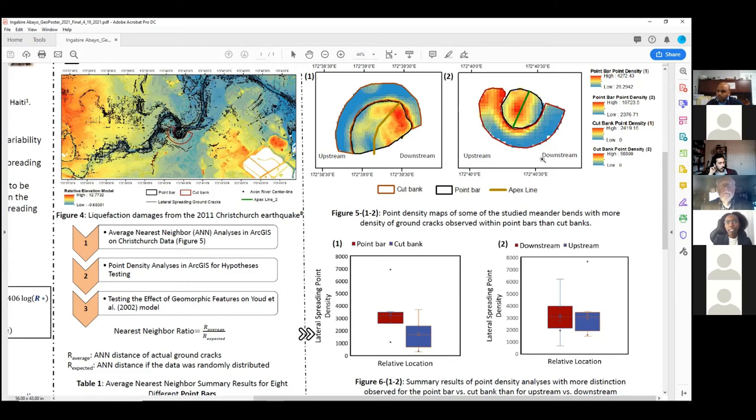Figure 5 here is an example of the point density map that we were able to generate. For example, if we zoom here in this meander bend, it's this meander bend on the right. And then in figure 6, we have a summary of eight different meander bends that we looked at for the preliminary results. And it shows also comparison between the point bar and the cut bank, as well as the downstream versus the upstream density of ground cracks.